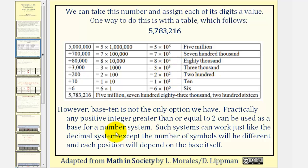However, base 10 is not the only option we have. Practically any positive integer greater than or equal to 2 can be used as a base for a number system. Such systems can work just like the decimal system, except the number of symbols will be different and each position will depend on the base itself.